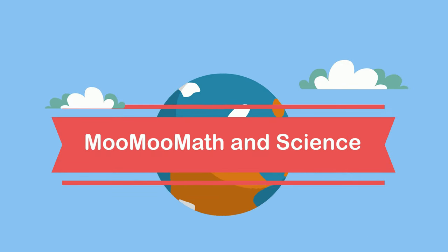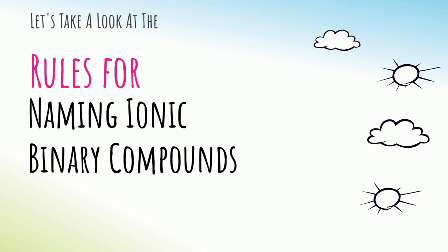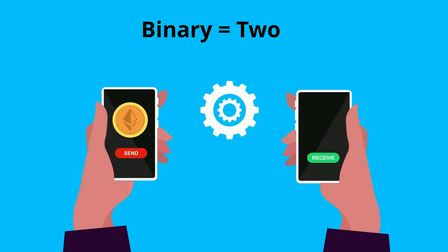Welcome to Moomoo Math & Science. In this video, let's talk about naming binary ionic compounds. First, binary means two, so you have two elements.